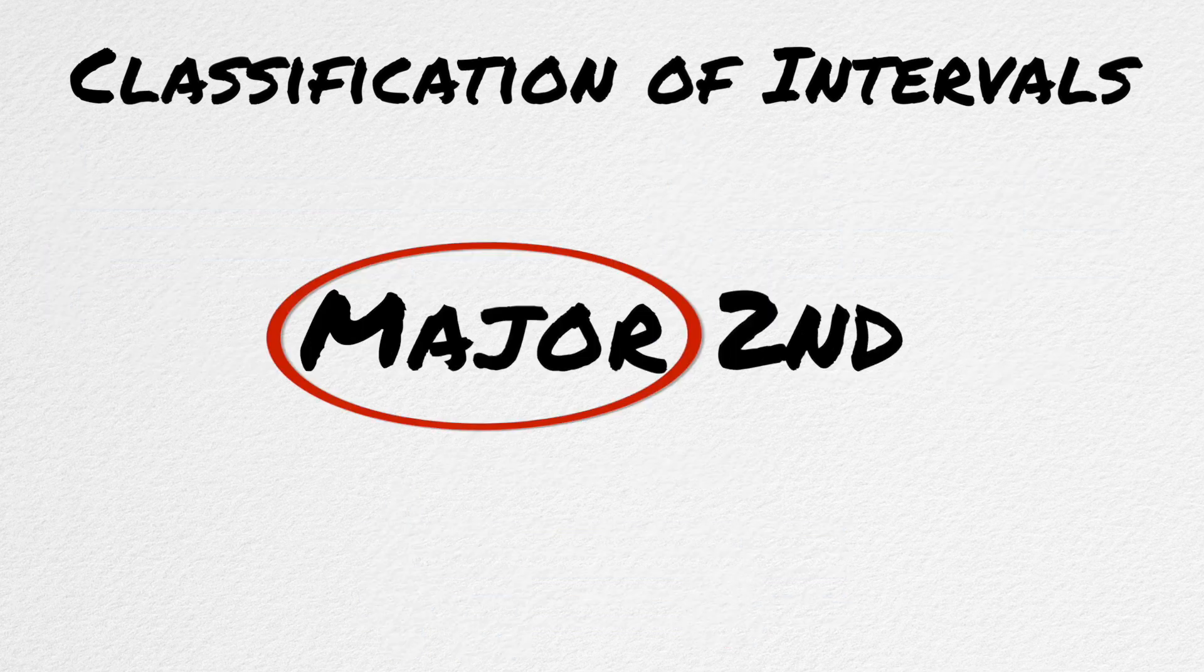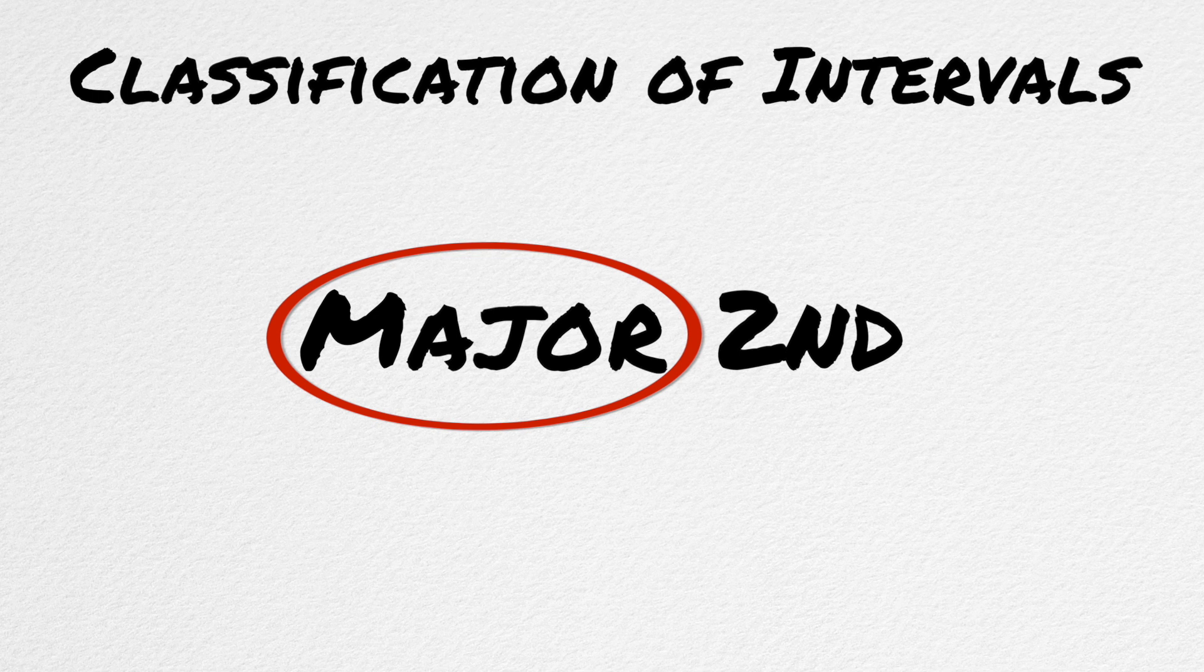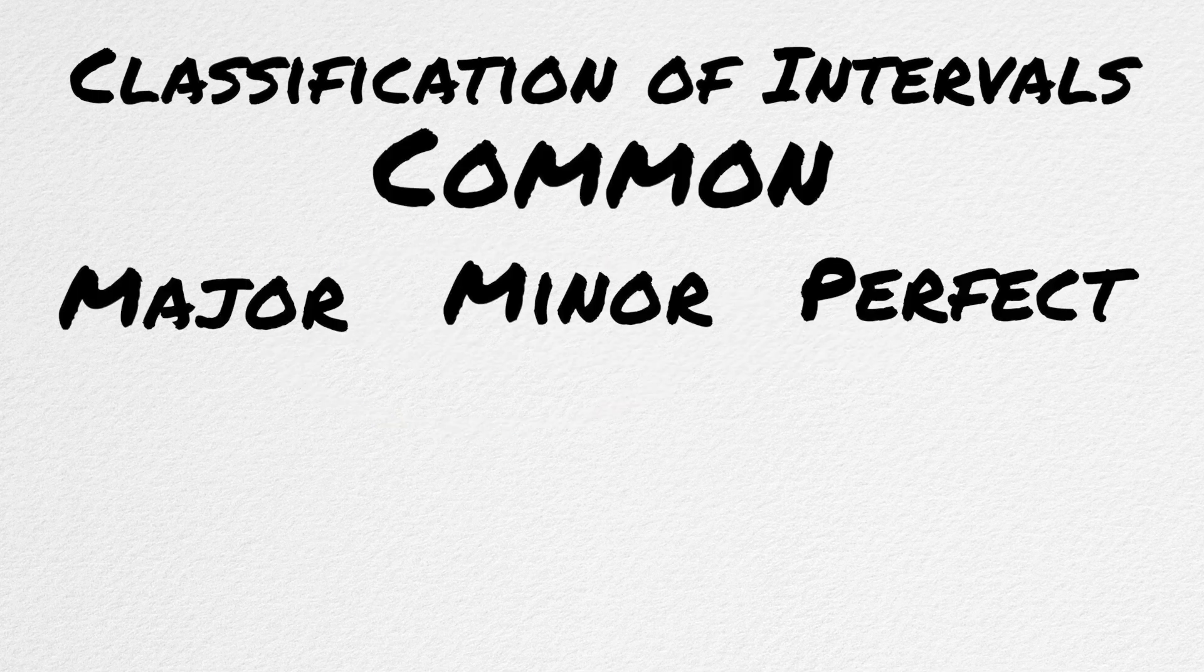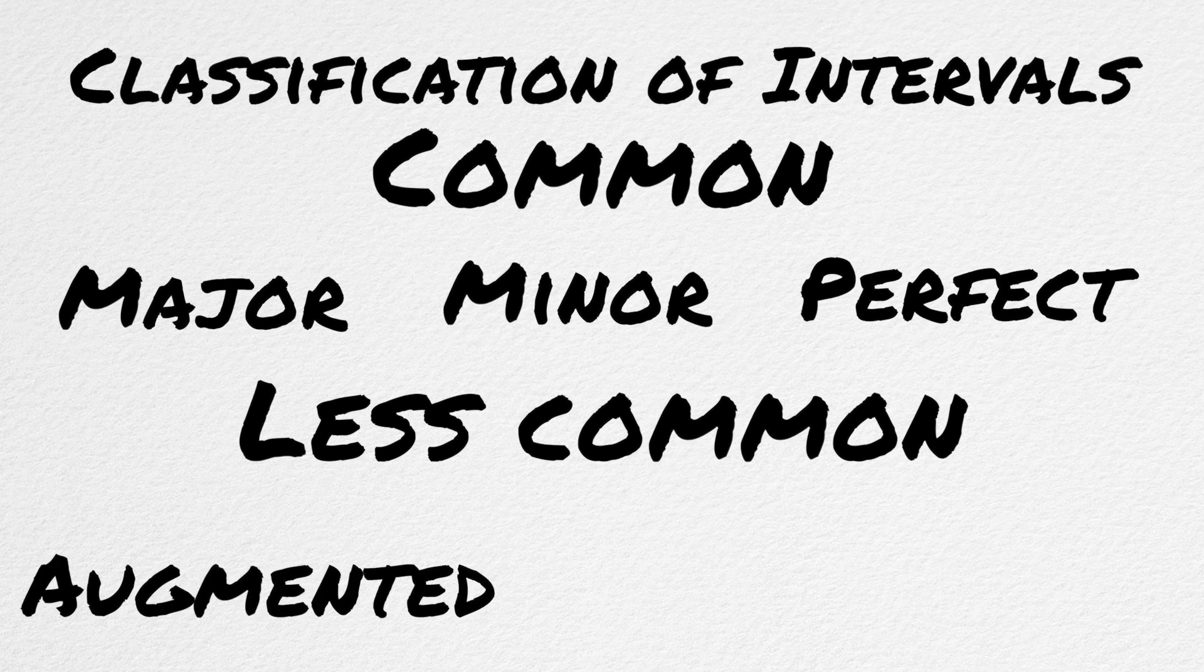The other part to an interval is its quality. Intervals are broken down into 5 qualities. 3 are common, and the other 2 are more rare. The 3 common ones are major, minor, and perfect. And the 2 less common ones are augmented and diminished.